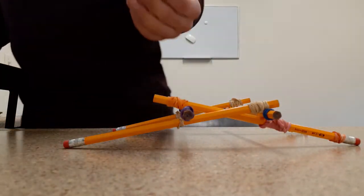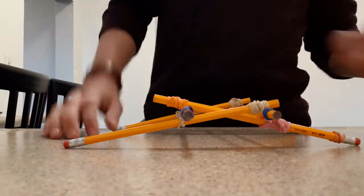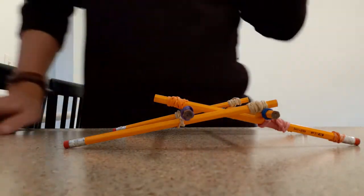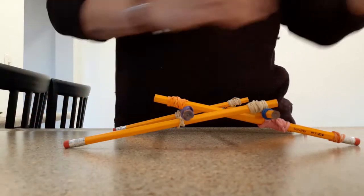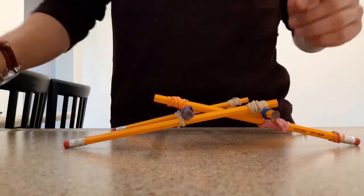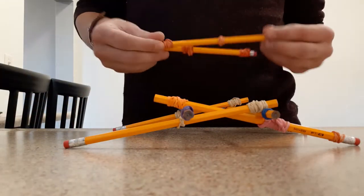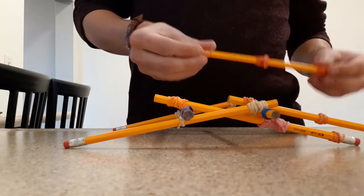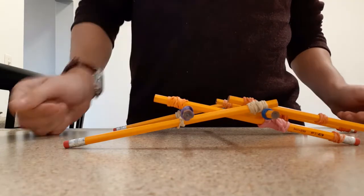However, you can, in theory, make this bridge as long or as high as you want. So, if we're going to keep going here, we are going to take another set of these pencils right here that have three rubber bands and place them on top where the rubber band is just at the top of this middle one.